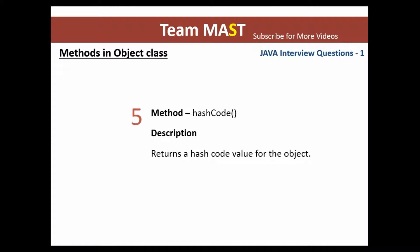The next method is hashCode. This method is used to return the hashcode value for this object. Each Java object has a unique hashcode.